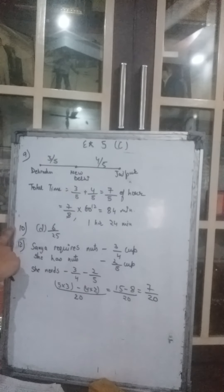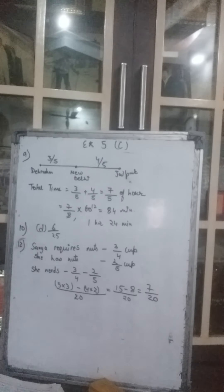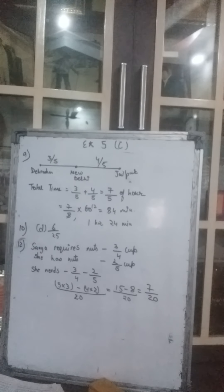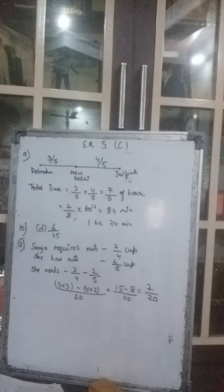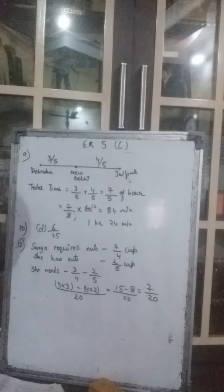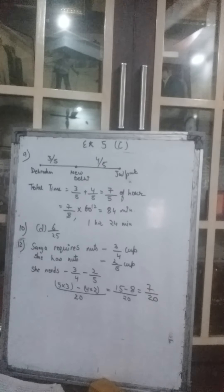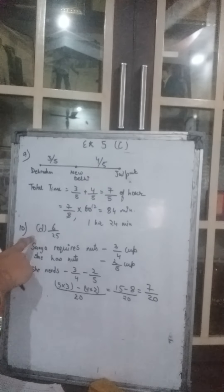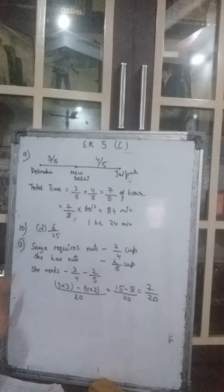We come to the 10th question. We will not do this in the class copy but I am explaining how to do it. Saira walked 11 upon 25 km on Saturday and 17 upon 25 km on Sunday. How much more did she walk on Sunday? You will subtract the distance of Saturday from Sunday's distance and you will get the answer. The correct answer is 6 upon 25.